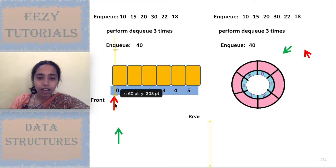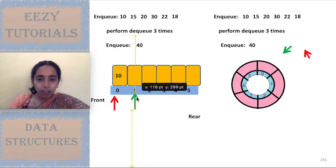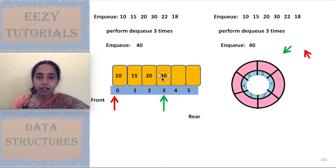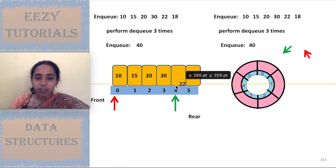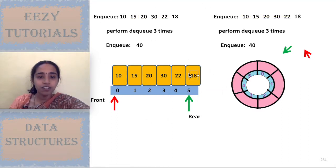For the linear queue, initially front and rear point to the zeroth index. I enqueue 10, then enqueue 15 — moving the rear pointer to the next position. Then enqueue 20, 30, 22, and 18, incrementing the rear pointer each time and placing the element at that position. The enqueue operation for the linear queue is now complete.